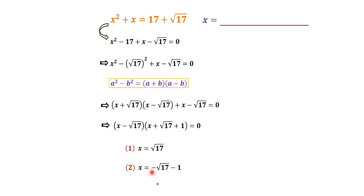The second root is x equals negative square root 17 minus 1. So the correct answer for this question is square root 17 or negative square root 17 minus 1.